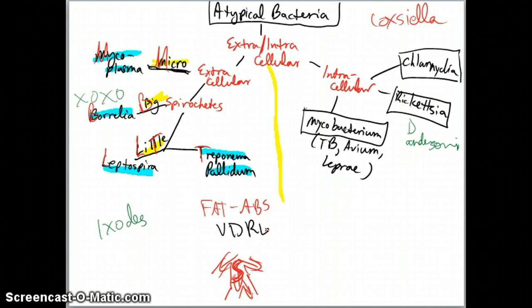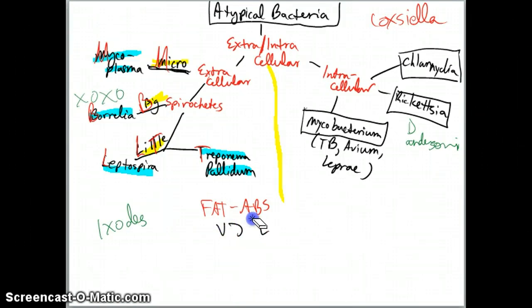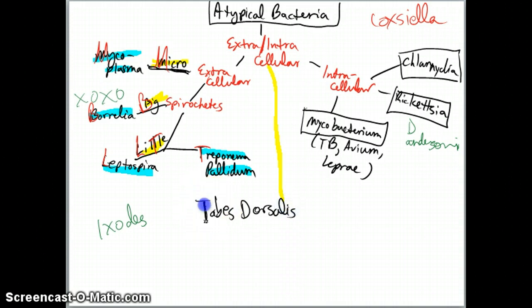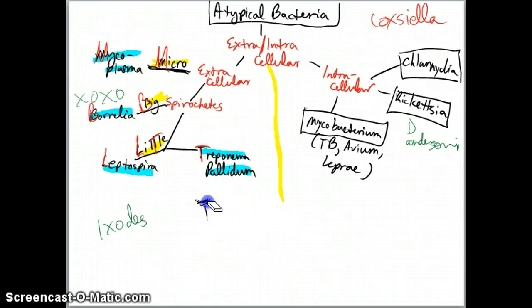At the secondary stage you can also get condyloma lata, meningitis, and it can go latent. If untreated, it goes latent and pops back up in tertiary form. At tertiary you're going to have tabes dorsalis - disruption of the dorsal spinal column. You'll also have gummas, which are granulomas, aortitis, and neurosyphilis affecting your nervous system, including the Argyle-Robertson pupil.